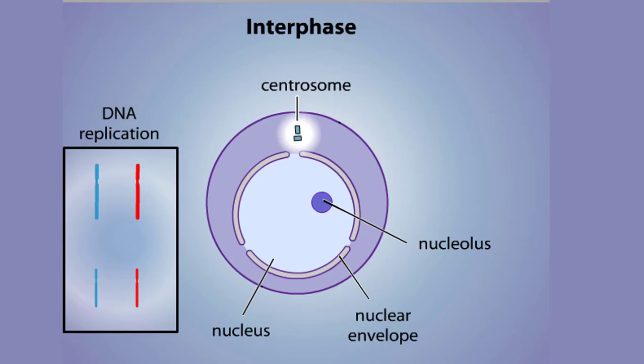In mitosis, the nucleus divides to produce two nuclei that are genetically identical to each other and to the parent nucleus. To prepare for division, the DNA replicates in the preceding interphase. Although the chromosomes are not yet compacted and visible as discrete bodies, we illustrate them as such to show the formation of a second chromatid per chromosome.